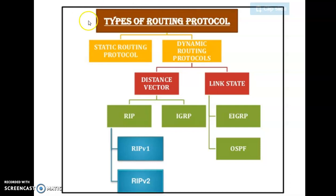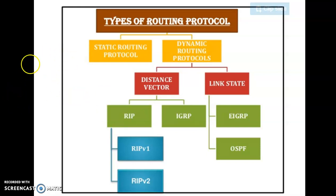Now in case of dynamic routing protocol, one should understand there are two types. One is distance vector routing protocol and the other is link state routing protocol. In case of distance vector routing protocol, the distance is the factor which comes into picture. So if there are two options available for the router — one with distance 10 and the other with distance 8 — it will select the shortest distance, which is 8. It is not going to look at how the link is, what are the different metrics of that link. It is just going to consider the distance. So in distance vector routing protocol, the router will select the path with the smallest distance without considering any link state.